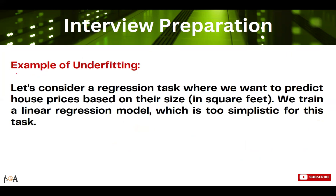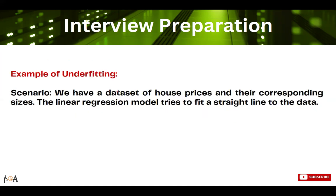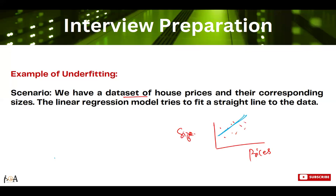If you want to explain it with an example, consider a regression task where we want to predict house prices based on their size. We train a linear regression model, which is very simple. We have a dataset of house prices on one axis and the size of the house on the other, and we are trying to fit this data with a linear line — essentially fitting a linear regression to it.